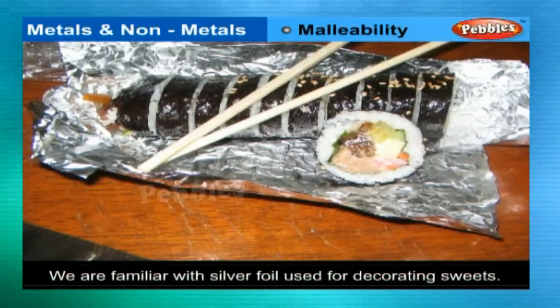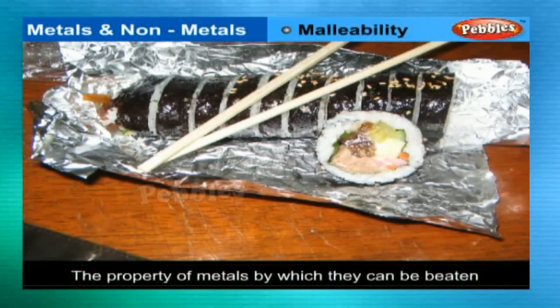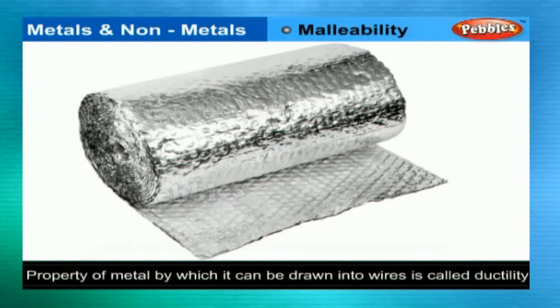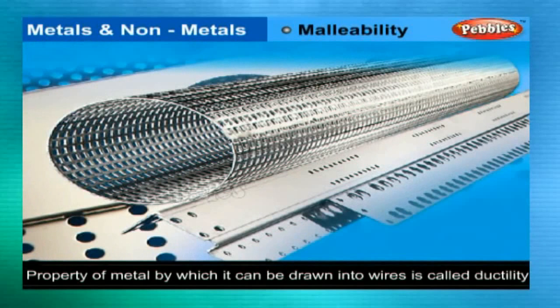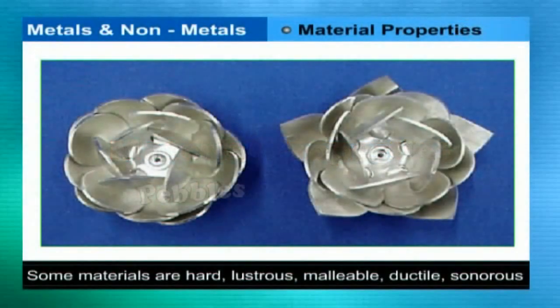Metals are good conductors of heat and electricity. The materials which are metals include iron, copper, aluminium, calcium, magnesium, etc. In contrast, non-metals break down into a powdery mass on tapping with a hammer. They are not sonorous and are poor conductors of heat and electricity. Examples of non-metals are sulphur, carbon, oxygen, phosphorus, etc.